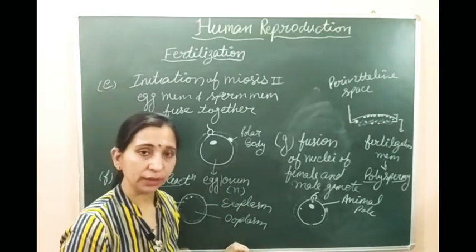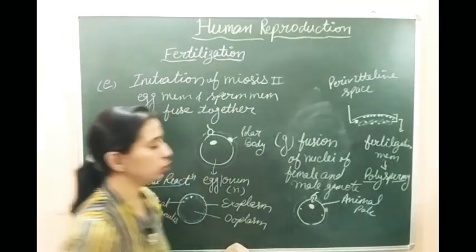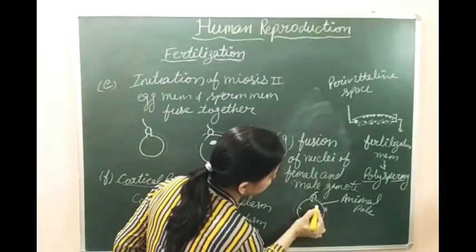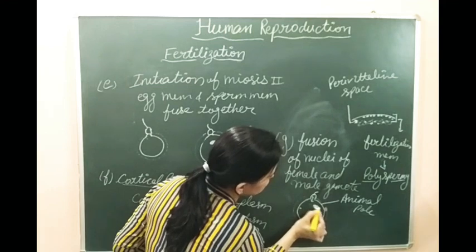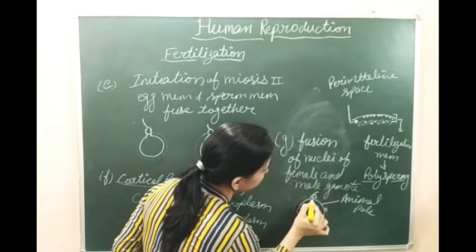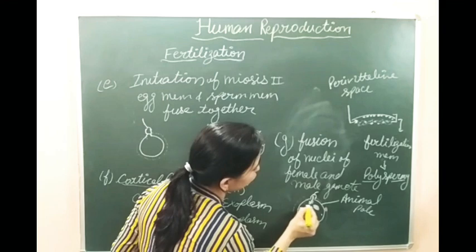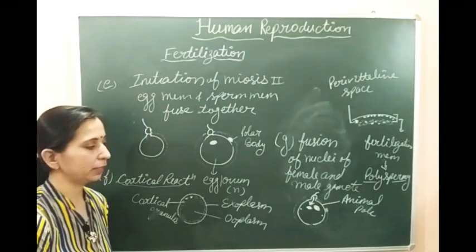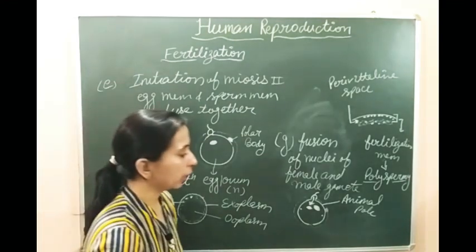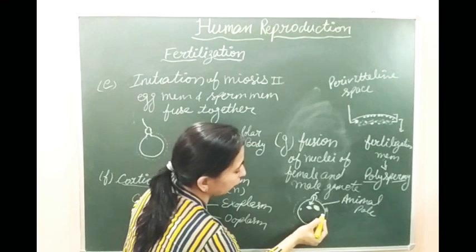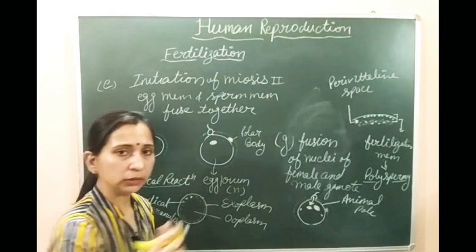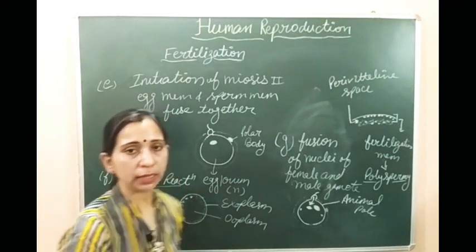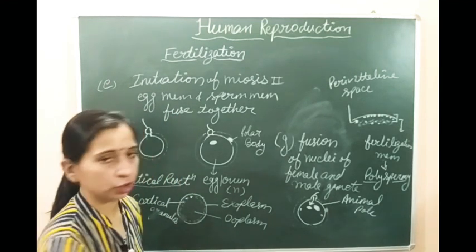We can draw the egg nucleus and the sperm nucleus coming inside the egg. The centrioles move to the opposite pole. The path which the nucleus of the sperm follows when entering inside the egg is known as the copulation path.